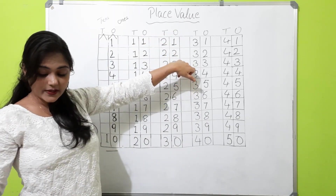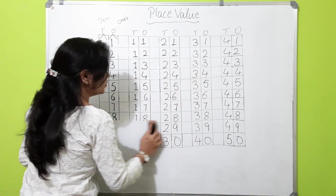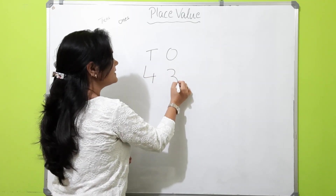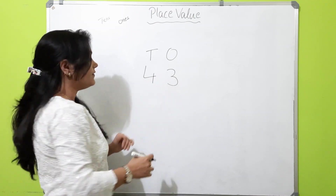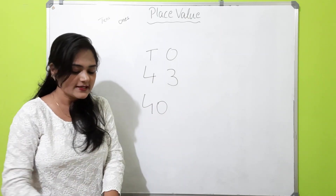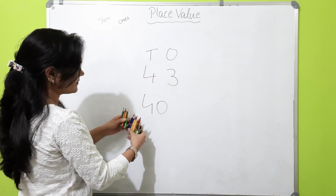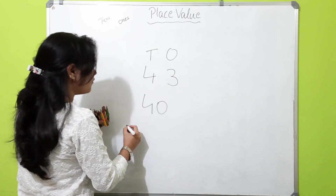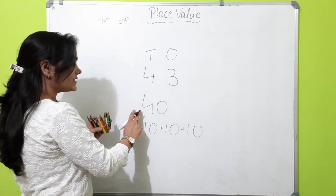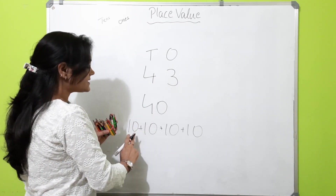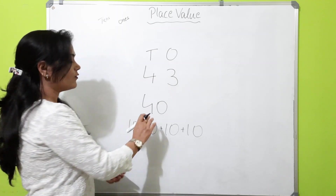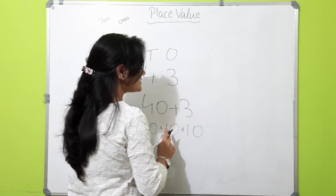Let me explain a little more. We have 43. So in 43, we have four tens. Is it four tens? Yes, this is four tens — it represents these four bundles. One 10, two tens, three tens, and four tens. So this is 40. And four tens and three ones — this three is only three. This is how you need to understand the numbers and their place.